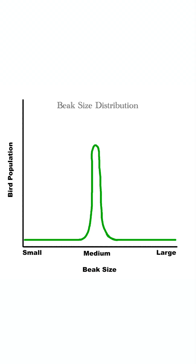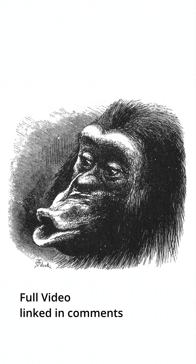So, as you can see, beak sizes would remain the same. Any birds born with beaks too large or beaks too small would not be as effective, and therefore have less kids and not become a bigger portion of the population.